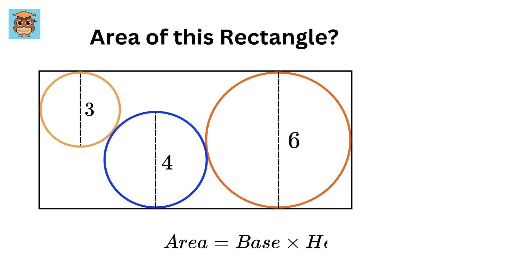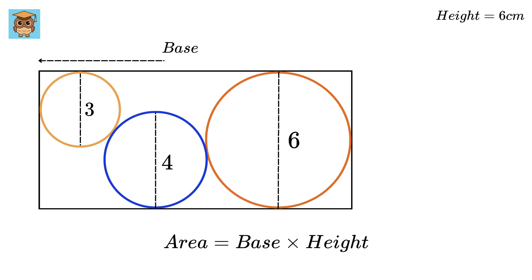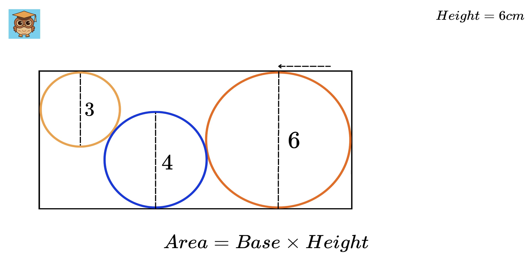We know that the area of a rectangle is given as base times height. The height is already given, which is the same as the diameter of the bigger circle — 6 centimeters. Now let us calculate the base. This first piece will be the same as the radius of the bigger circle, which is 3 centimeters, since the radius equals half the diameter. And this small piece will be the same as the radius of the smaller circle, which is 1.5 centimeters.